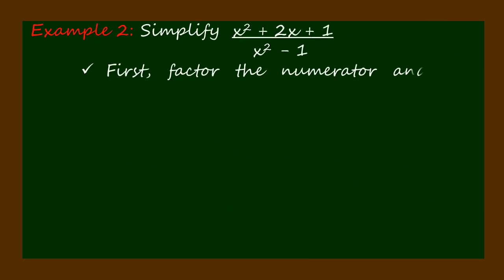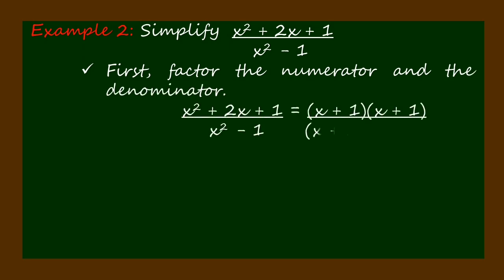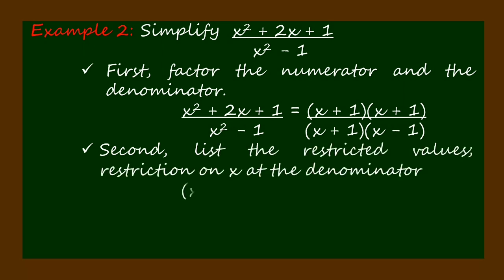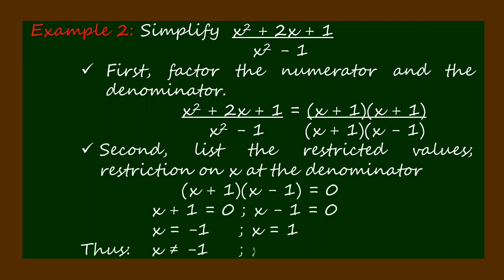Example 2: Simplify (x² + 2x + 1)/(x² - 1). In this example, the restricted values of x are -1 and positive 1. Thus x ≠ -1 and x ≠ 1.